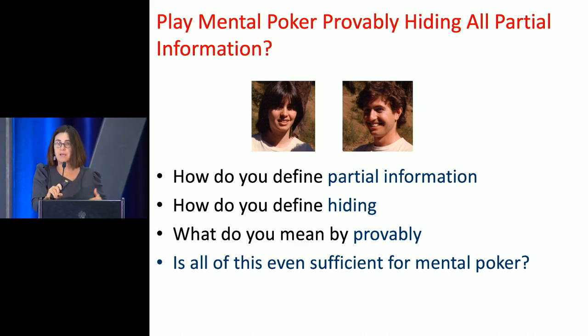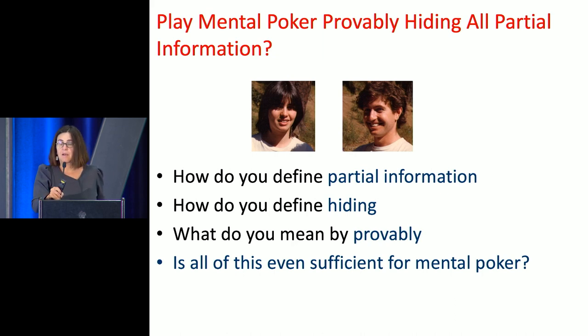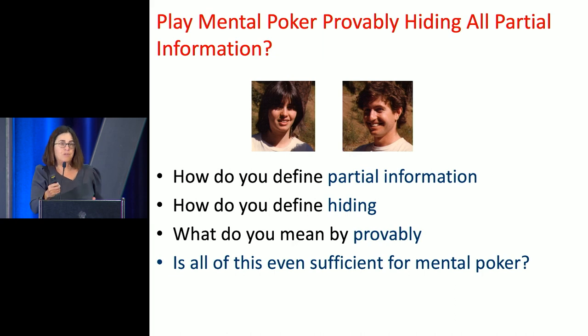We realized there were a lot of questions to answer before you could propose a protocol. First of all, how do you even define partial information? What do you mean by partial information? How do you define hiding? And we wanted a provable solution — we're theoreticians, so what does it mean to prove it? Even if we defined all these things — partial information, hiding, and proof — is it really sufficient to say we have a proposal that works for mental poker?